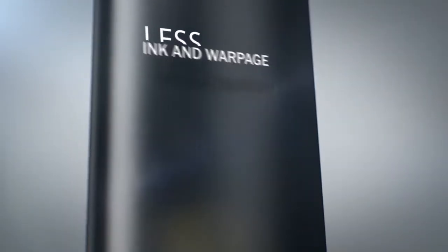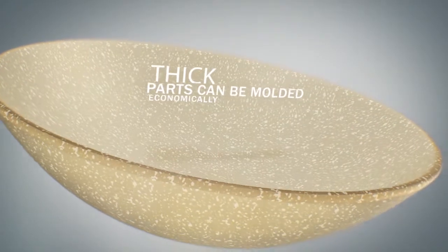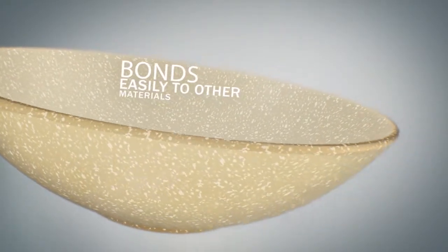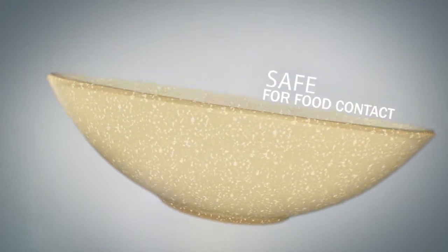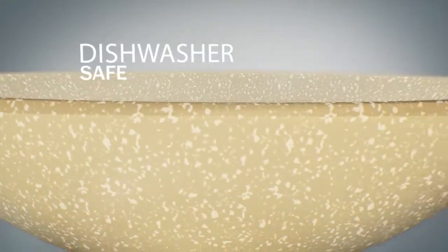Thrive cellulose flakes can be dispersed so they are virtually invisible, or the flakes can be showcased in bowls, cutting boards, or other home products to celebrate their beauty and beginning as a tree.